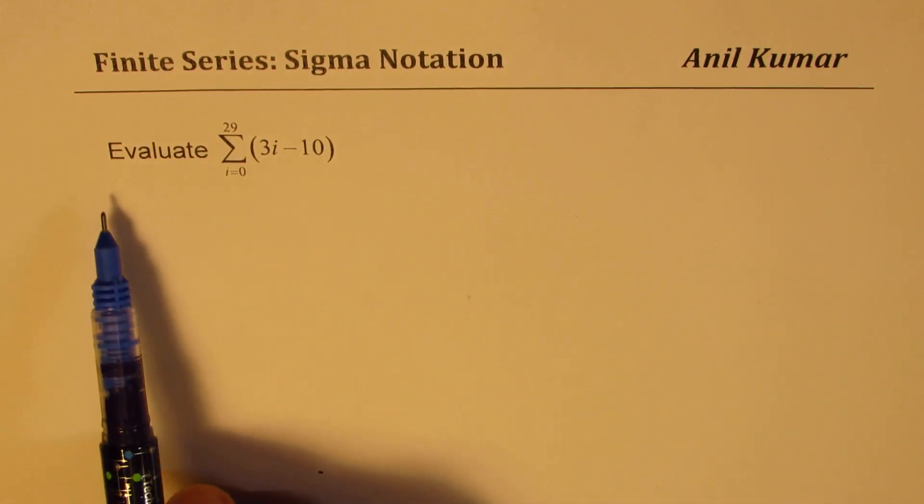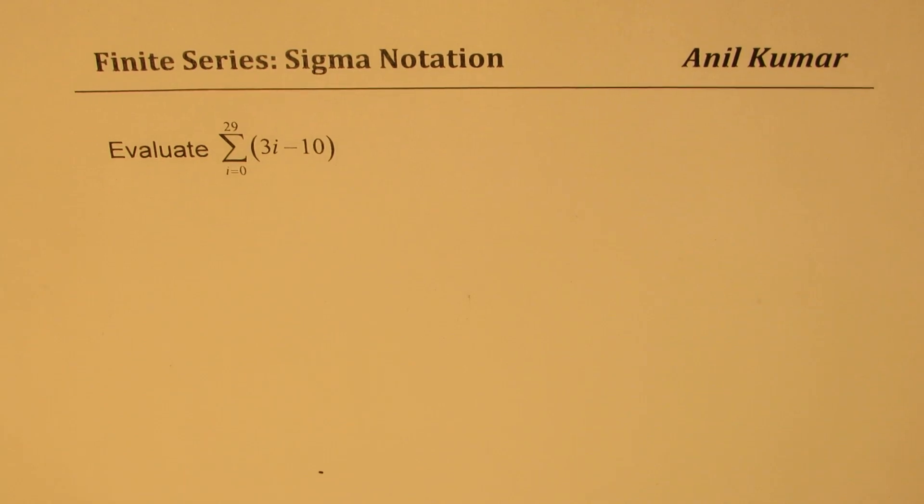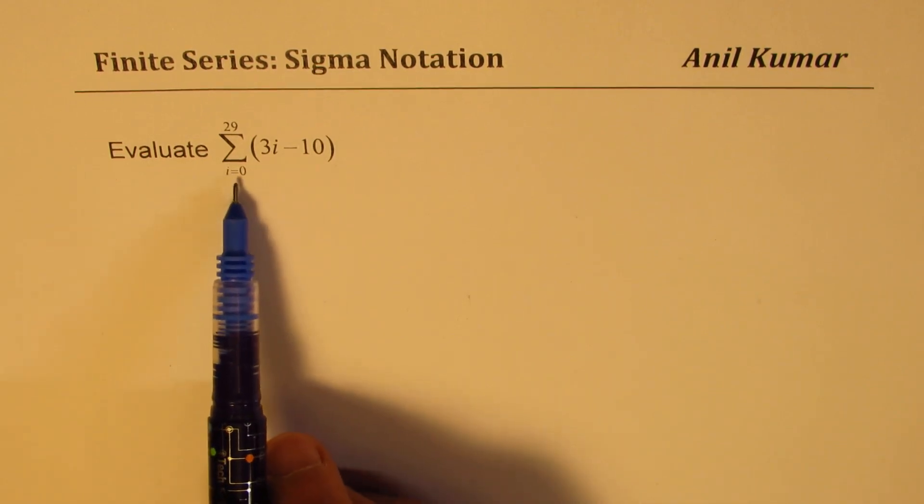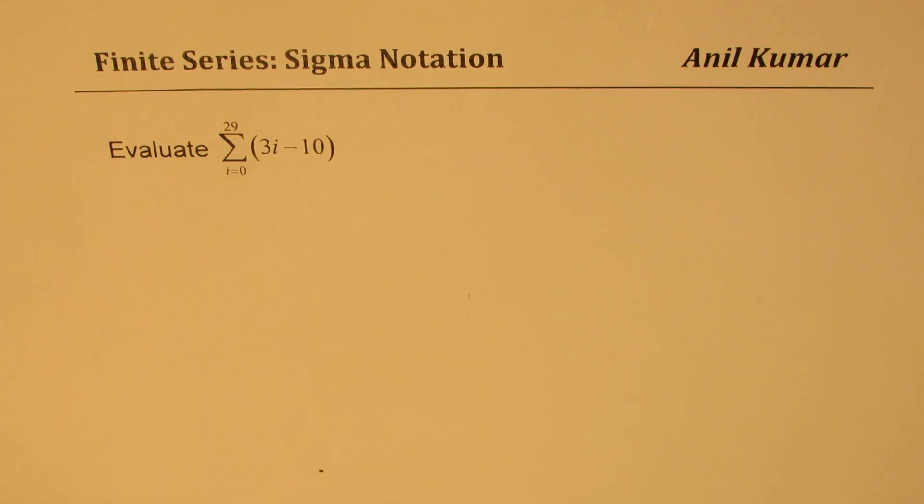The question here is to evaluate 3i minus 10, where i is from 0 to 29. Now the starting point of i could be anything. It could be negative, 0, even some positive bigger number.